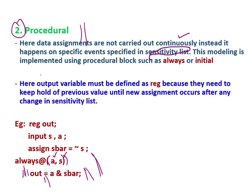This is procedural — it depends on the sensitivity list. This modeling is implemented using procedural blocks such as 'always' or 'initial'. The output variable must be defined as 'reg'. Inside an 'always' block, the assignment target — such as 'out' — should be declared as 'reg', because 'reg' behaves like a register and holds data. It needs to keep hold of the previous value until a new assignment occurs after any change in the sensitivity list.